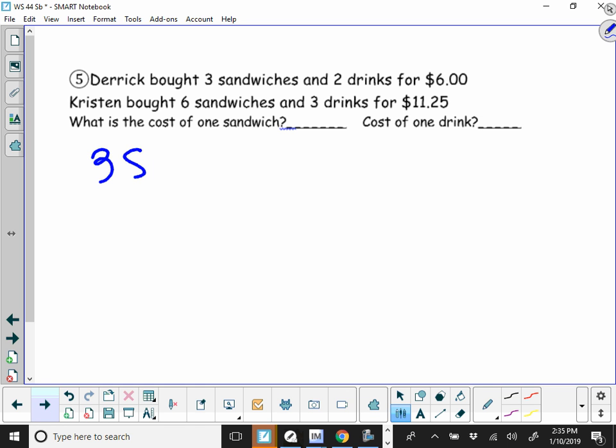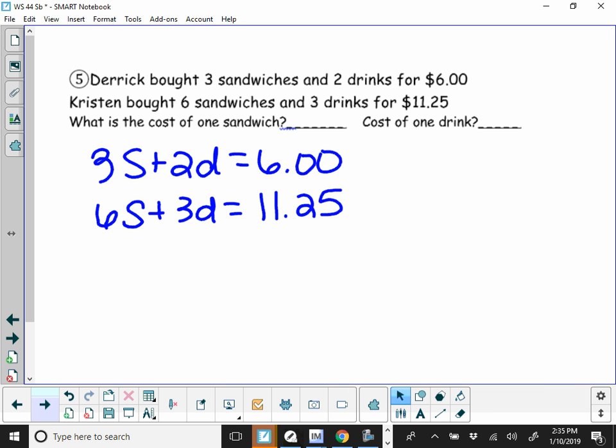Okay, so Derek bought 3 sandwiches and 2 drinks for $6. Kristen bought 6 sandwiches and 3 drinks for $11.25. To solve this,